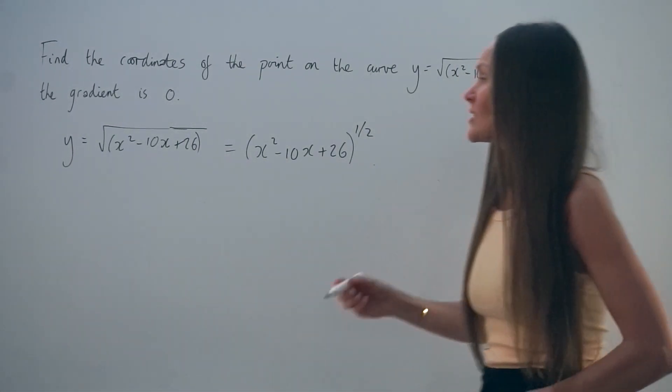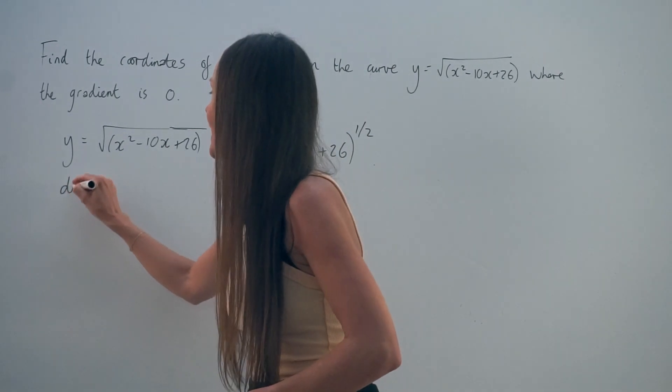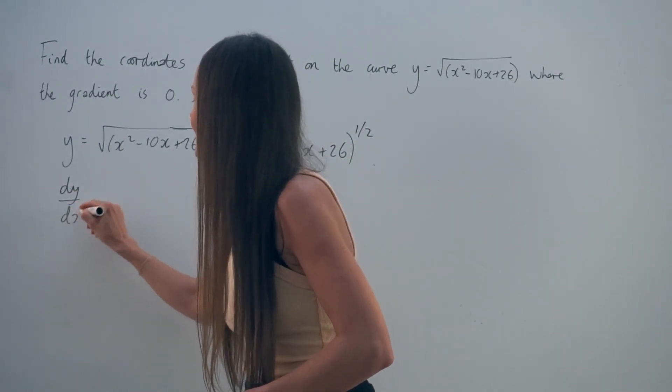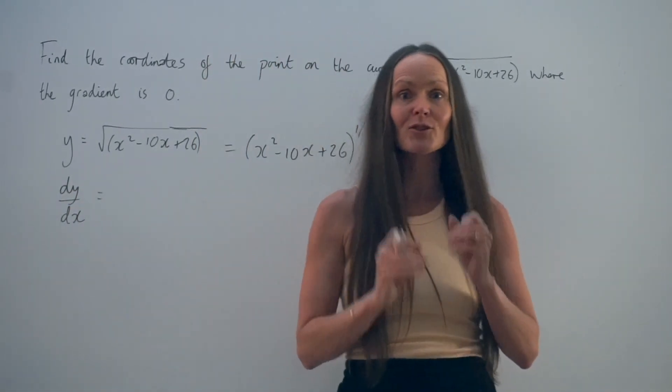So when we're using the chain rule, we differentiate the outside of the brackets, the inside of the brackets, and we multiply those two answers together.